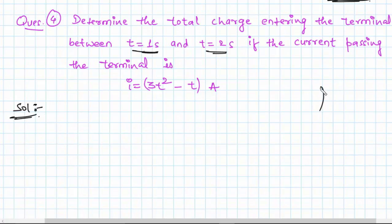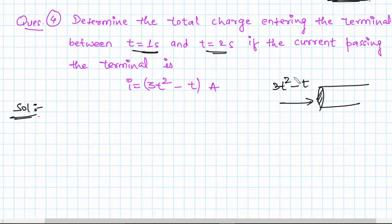We have a terminal here — let me just draw it to give you an intuitive feeling of what the problem is. So we have this terminal, and the problem says that through this terminal a current of 3t squared minus t is passing. We need to find out between t equals 1 second and t equals 2 seconds how much charge is entering. We use the formula q equals the integral from t0 to t1 of i dt.